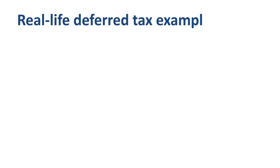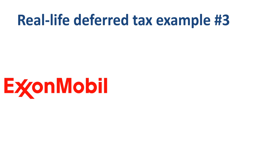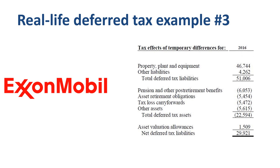Third example, ExxonMobil, which is a much more capital-intensive company. ExxonMobil's overview actually starts with deferred tax liabilities at the top, and deferred tax assets below it.